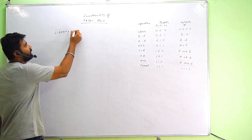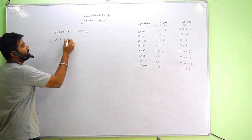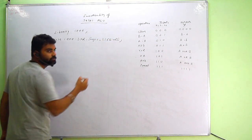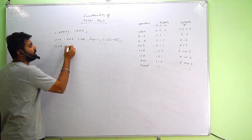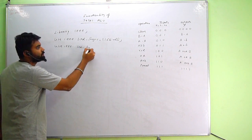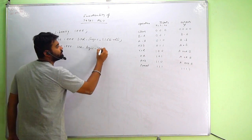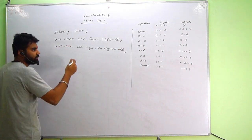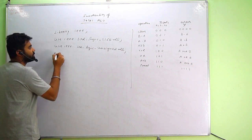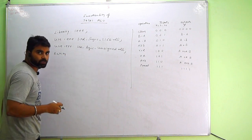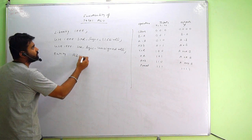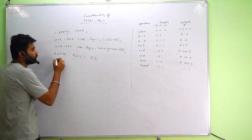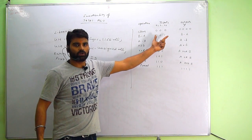Library IEEE, use IEEE dot standard_logic_1164 dot all. We use unsigned because these are all unsigned numbers. Entity — it will have 3 inputs and 4 outputs.